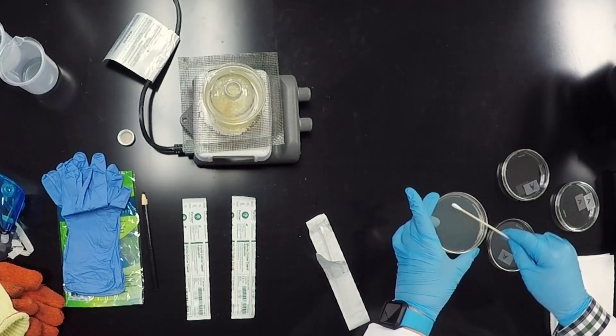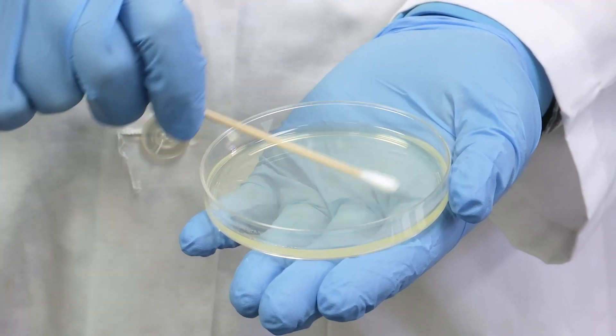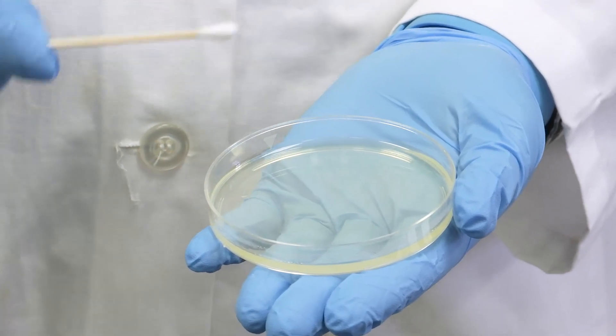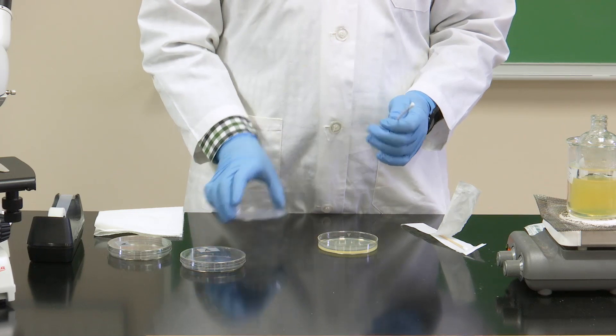Now take your swab and wipe it in a zigzag pattern across the agar gently. You do not need to press hard. As long as they make contact, it should be fine. Now, cover your petri dish with its lid and tape it shut. Do not open it back up after you do this.